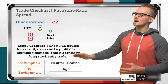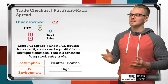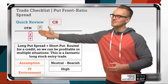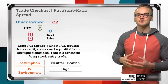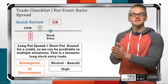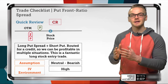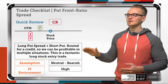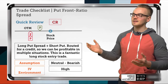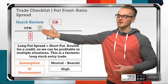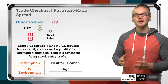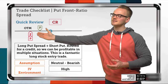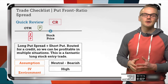One thing to realize is that this spread is really just a long put spread and a short put combined. I've got a long out-of-the-money put spread here, and I'm just selling an extra short put against it to reduce my cost basis and turn this trade from a debit into a credit. When we do this for credit, we can be profitable in multiple situations — either having the entire spread expire out of the money to keep that initial credit, or pinning the short strike for maximum profit.